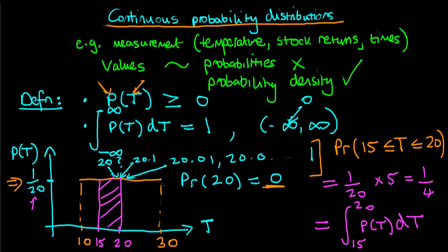Using this integral interpretation, we can see that as our sets shrink to the limit where we have just one value — like just 20 degrees — the probability of that particular set equals zero, because the area under the curve at a single point is zero.